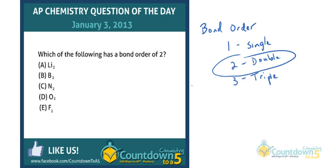Well, we can eliminate two answers immediately because only certain atoms form diatomic elements, and those are the Brinkelhoffs: bromine, iodine, nitrogen, chlorine, hydrogen, oxygen, and fluorine. So that immediately eliminates lithium and boron.